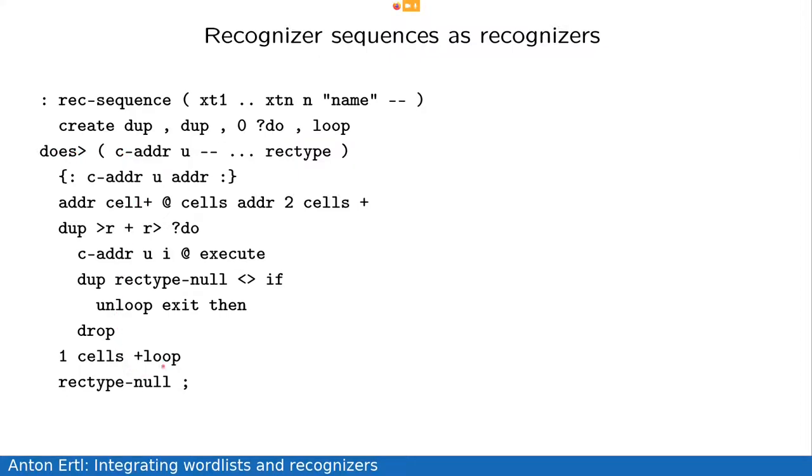In the does part, this is pretty involved. But basically, the thing is that it fetches a recognizer, it executes it, and then it checks did it recognize something. So, if it recognizes something, then the result is not rec-type-nil. And if it recognized something, it unloops and exits. And then we are done. And if it didn't recognize something, it drops this rec-type-nil and continues. And when it has gone through all the recognizers and hasn't found anything, it returns rec-type-nil.